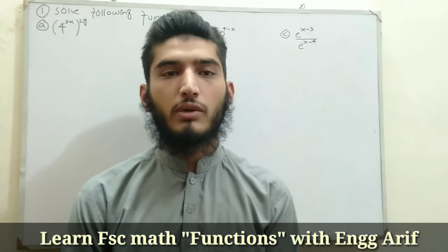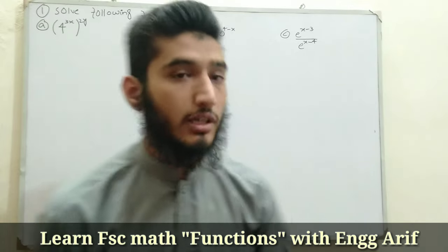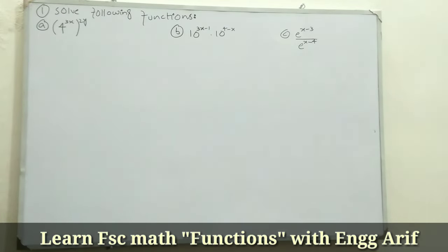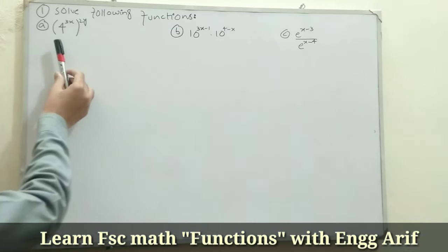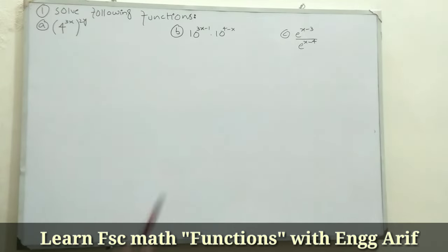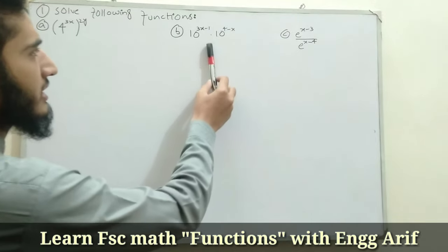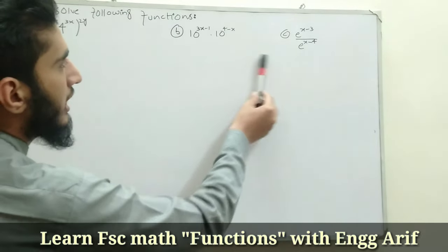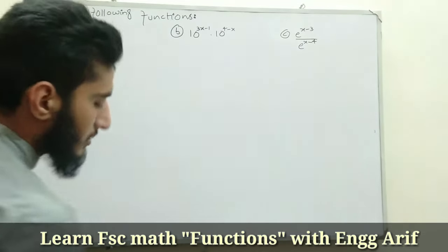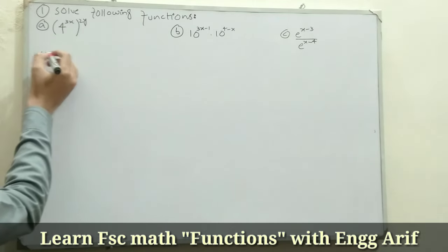In this video I will solve question number 1 related with exercise 1.2, which is about simplification of the following functions. There are six parts in question number 1. Part a is 4^(3x)^(2y), part b is 10^(3x-1) multiplied by 10^(4-x), and part c is e^(x-3) divided by e^(x-4). I will solve them one by one, so let's start with part a.